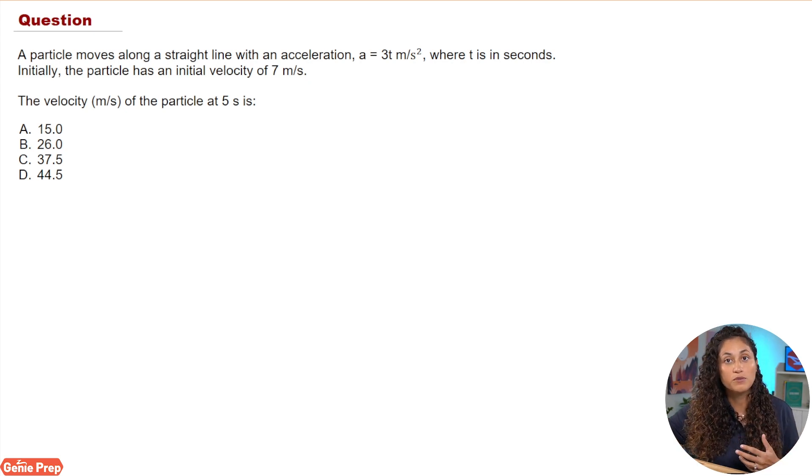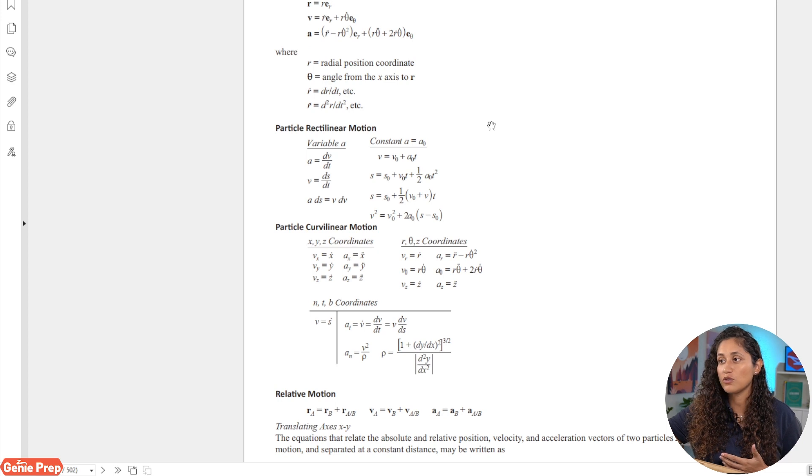If we go to the reference manual and take a look at the equation here, we need an equation that relates the acceleration to velocity. Here we have acceleration is equal to the derivative of the velocity with respect to time. Now the problem is we have the acceleration and we're actually trying to look for the velocity, right?